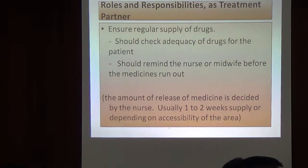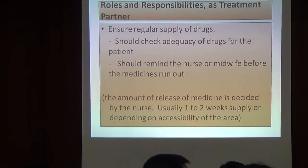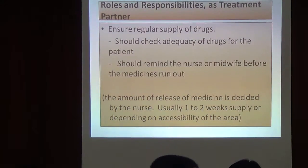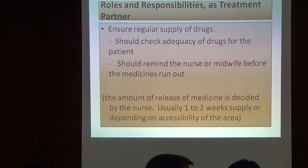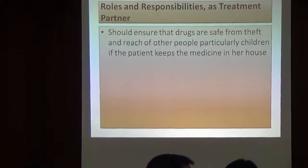Ensure the regular supply of drugs. Check the adequacy of drugs for the patient and remind the nurse or midwife before the medicine runs out. The RHU gives medicine to the treatment partner for two weeks at a time. When you are about to run out, inform the nurses or midwives. Also ensure the drugs are kept safely, away from reach of other people, especially children, if the patient keeps medicine at home — better if we keep it ourselves.